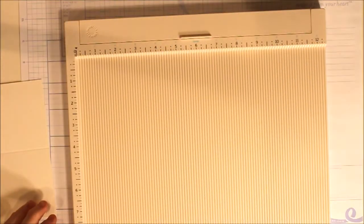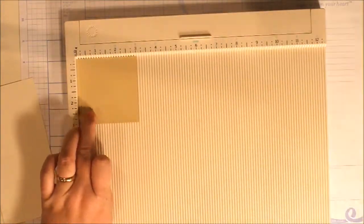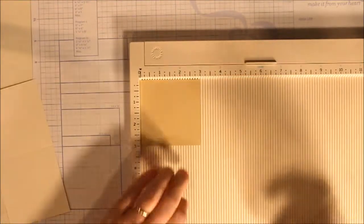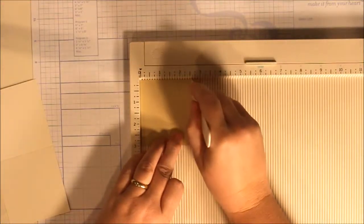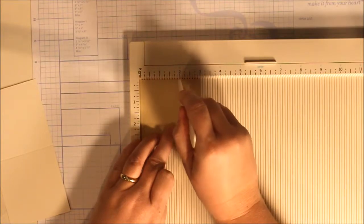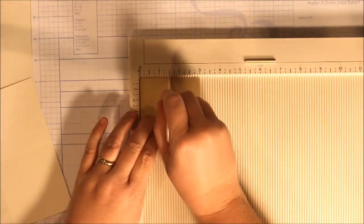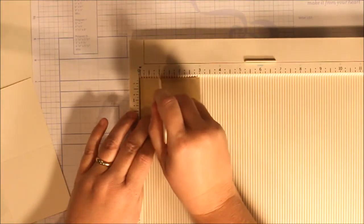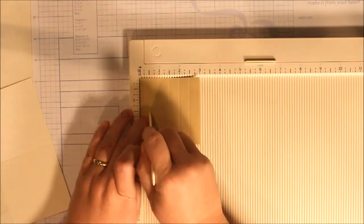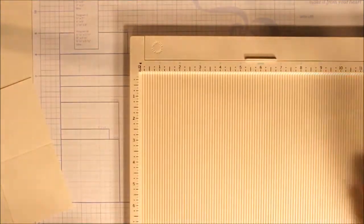And then we're going to do a score line every half inch down the piece of bamboo. So we're going to score it again every half inch. You have to make sure you don't press down too hard because the scoring tool will go through.